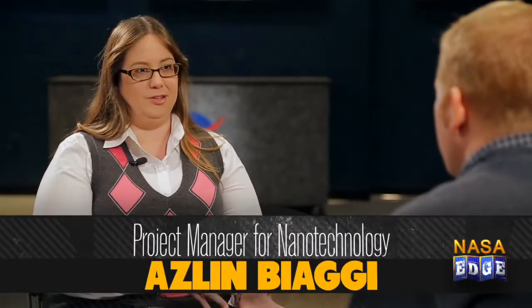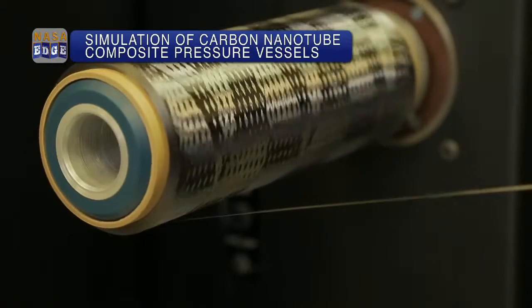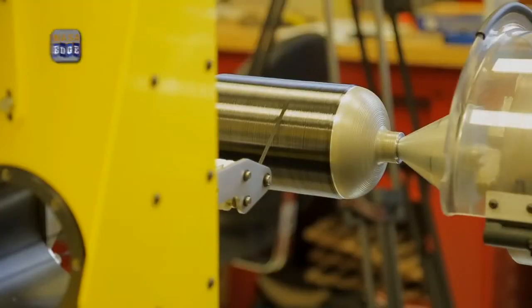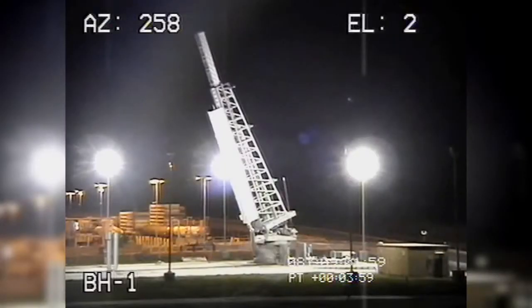We're here with Aslan Biagi, who's the project manager for nanotechnology. So, Aslan, tell us about what you're doing with nanotechnology. Our goal is to actually use the nanotechnology and make lighter materials so that we can reduce weight on the vehicles, on launch vehicles. And I understand you have a big flight test that you're moving toward. Yes. So, our carbon nanotube reinforcement composites that we're developing in the nanotechnology project will later be placed on a composite overwrapped pressure vessel, which will be launched on a sounding rocket.